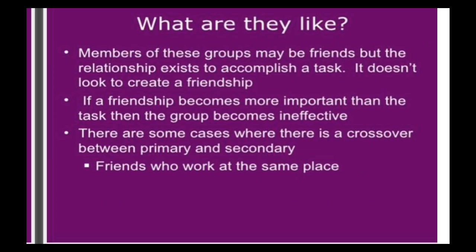Members of a secondary group may be friends, but relationships exist to accomplish a task — it doesn't look to create a friendship. If a friendship becomes more important than the task, then the group becomes ineffective. There are some cases where there's a crossover between primary and secondary group — in other words, friends who work at the same place.